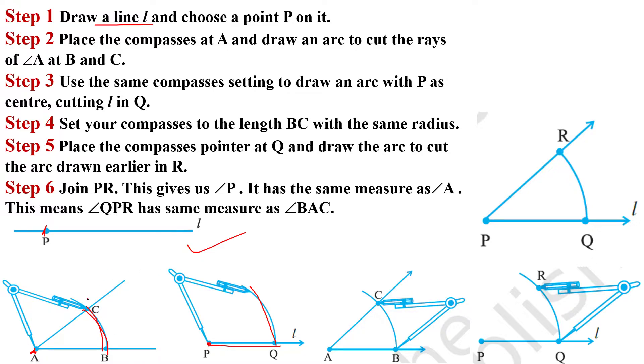Now you have to measure this length of arc BC through the help of compass. Yeh dekhi, hum ne measure kar liya. And this step se hum kya karenge, pin point Q per put karenge and this arc can be cut and we mark here point R, then join PR.